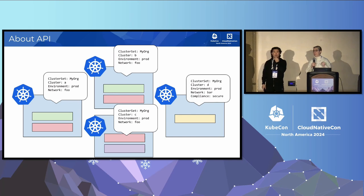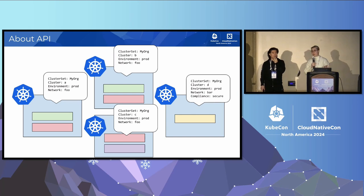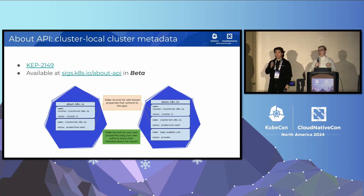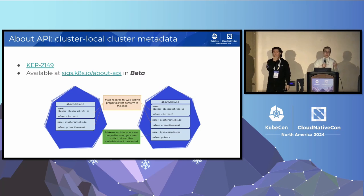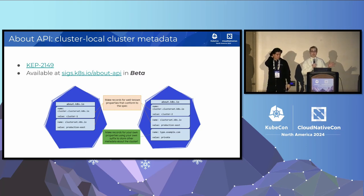The most important properties in the projects we're working on right now in SIG multi-cluster are the cluster's name and the cluster set it's a member of — basically, what other clusters it's affiliated with. But the About API was designed to be flexible enough that you can add any other properties you want to represent cluster-locally. If you want to find out more, there's the KEP link, and there's also the About API specification at sigs.k8s.io/about-api. It provides opportunity to define any other type of record — maybe stuff you were putting in labels or annotations and would like to access with a CRD instead.